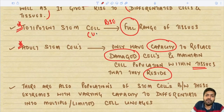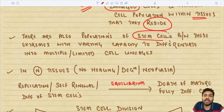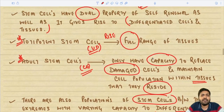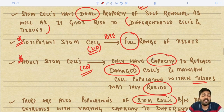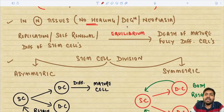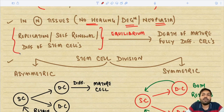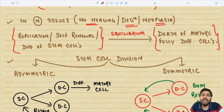Totipotent and adult stem cells represent the two extremes — completely undifferentiated versus tissue-limited. Between these extremes are stem cell populations with varying capacity to differentiate into multiple or limited cell lineages. In normal tissues — with no healing, degeneration, or neoplasia — the processes of stem cell self-renewal and differentiation are in equilibrium with the death of mature, fully differentiated cells.